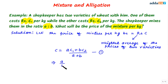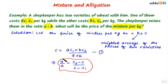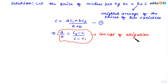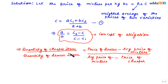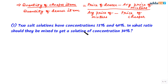Rearranging the terms of the first formula, we get: a/b = (C2 − C) / (C − C1). This formula leads us to the concept of allegation. The concept of allegation gives us the relationship between price and quantity of various types of an item in a mixture. The formula is: quantity of cheaper item / quantity of dearer item = (price of dearer item − average price of mixture) / (average price of mixture − price of cheaper item). This is a very important formula to memorize.